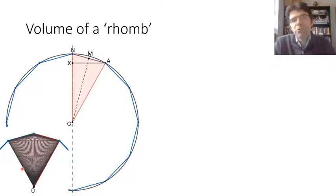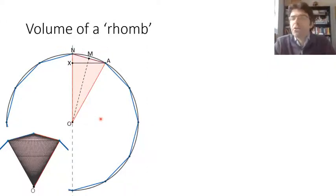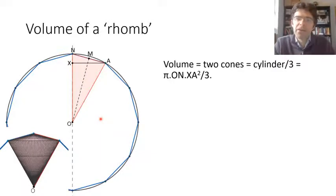This rhomb is formed of two cones with the same base, radius xa. In Archimedes' day it was well known that the total volume is going to be a third of the cylinder that's got the same diameter and the same total height — a result that goes back to Eudoxus. So in our symbols, the volume would be π times xa squared times ON, all divided by three.